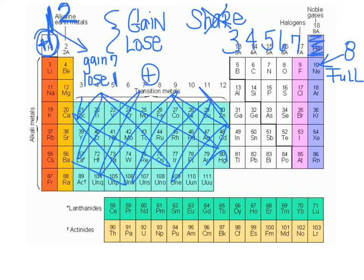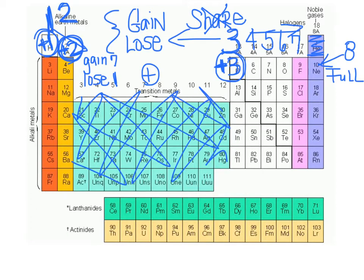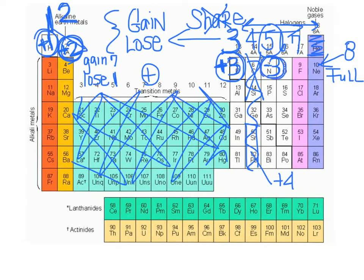The second column has 2 valence electrons — easier to lose 2 than gain 6, so they form a plus 2. The third column forms a plus 3 by losing 3. The fourth column tends to share since gaining or losing 4 is difficult. The fifth column, with 5 electrons, gains 3 to reach 8, forming a negative 3. The sixth column gains 2, forming negative 2. The seventh column gains 1, forming negative 1.